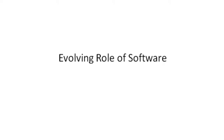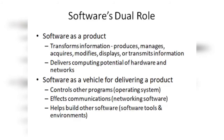We start by discussing the evolving role of software. Software has a dual role — software के दो roles हैं: as a product and as a vehicle. Software as a product is something we directly use — for example, WhatsApp. WhatsApp is a software written in lines of code that executes and gives you certain data and information for which it is designed.